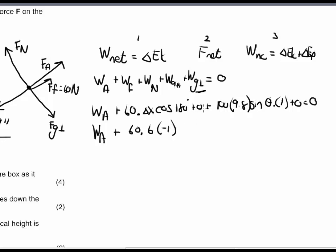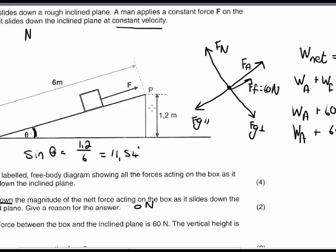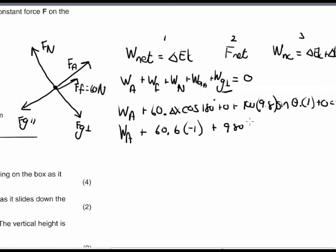Simplifying: 60 × 6 × cos 180° = −360, plus 980 × sin 11.54°, all equal to 0. Solving for the work done by the man on the box gives a negative answer of −816 J. The answer is negative because the box moves down the slope while the force applied by the man is up the slope — they are in opposite directions.